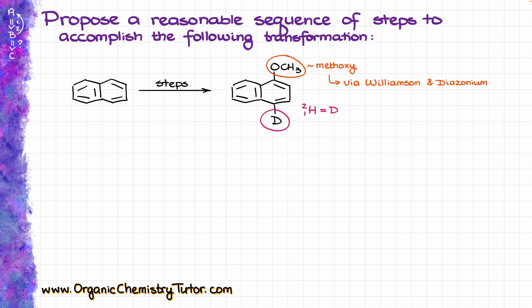There are not that many ways to put deuterium into our molecule. The common method is going to be some sort of a deuterium exchange via the acid-base reaction, but this position in our molecule is not acidic at all, so we need to come up with a different strategy. One of the common strategies is to put deuterium via the Grignard quench, where we make a Grignard reagent or a similar organolithium compound, and then work it up immediately with deuterated water, which will replace MgBr or lithium with the corresponding deuterium.